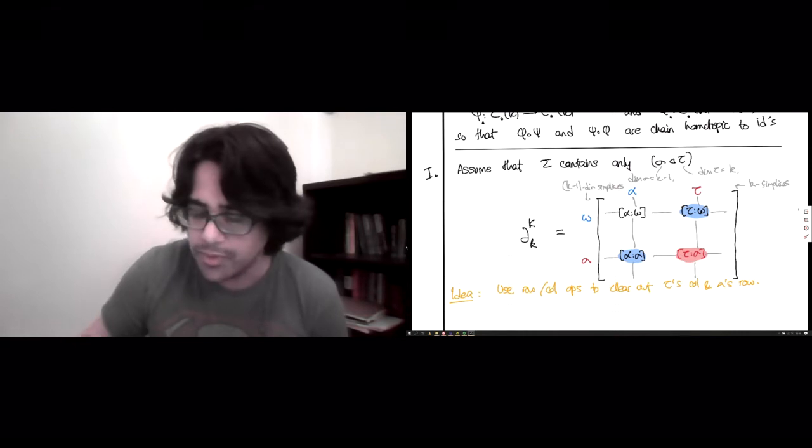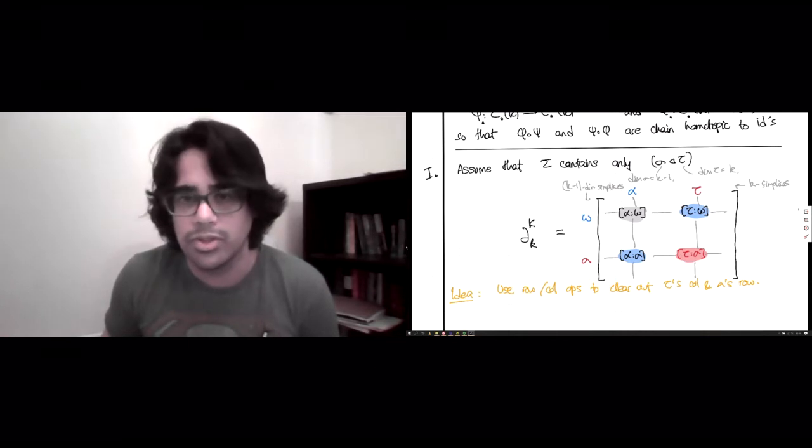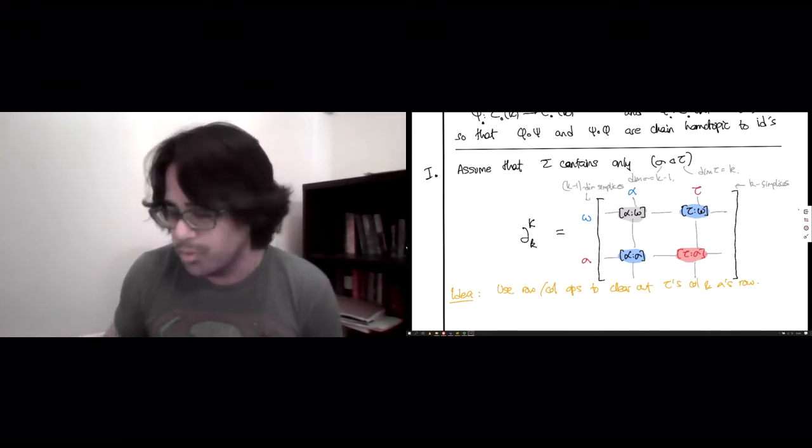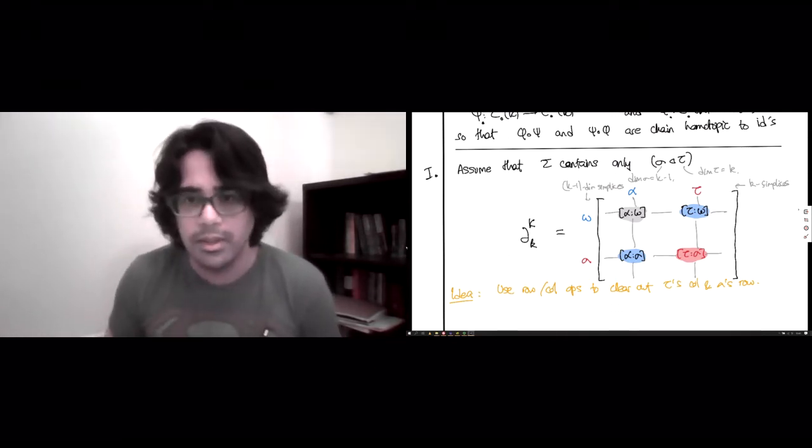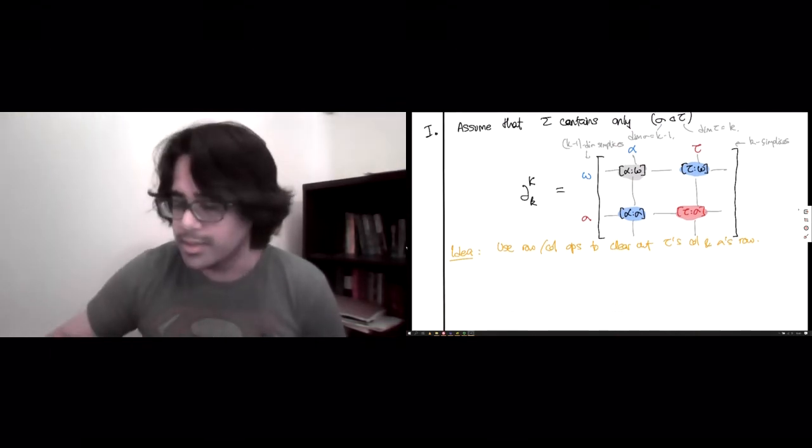And what we're going to do is implement those row operations one at a time and column operations one at a time, and just sort of tabulate what happens as a result of those operations to this arbitrary incidence between alpha and omega, which, so we want to clear out the rows and columns, the one row of sigma and the one column of tau, and look at the effect of those row and column operations on this arbitrary alpha omega incidence in the matrix.